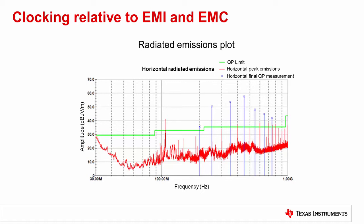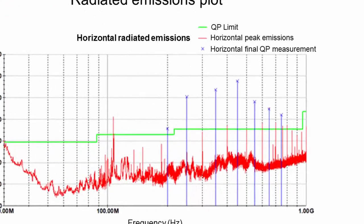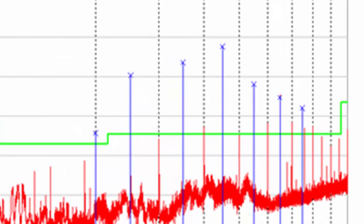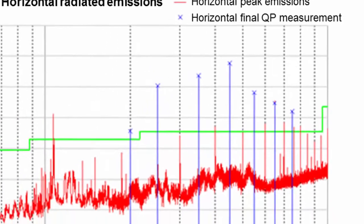While peak measurement only indicates the maximum amplitude of the spectral content, quasi-peak measurements weight the frequency peaks based on their rep rate, or repetition rate. Some quasi-peak values in blue are exceeding the green quasi-peak limit line, indicating an emissions test failure.